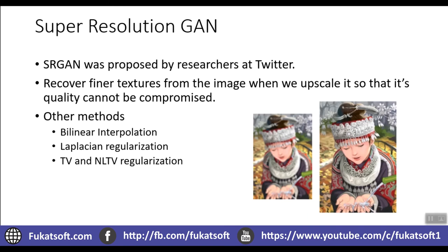So we use generative adversarial networks in order to generate an image that is super-resolved with finer details. Here we can see that our image is very small — a blurry image — which we have converted to high resolution, and we have recovered the final details of it.